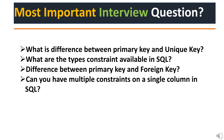The third question: what is the difference between primary key and foreign key? A primary key guarantees uniqueness within the table, ensuring each record stands out. A foreign key is all about maintaining relationships between tables — the primary key is the star within its own table while the foreign key is the connection between tables. The fourth question is a little tricky: can you have multiple constraints on a single column in SQL? Yes, you can apply multiple constraints to a single column to enforce different rules simultaneously.